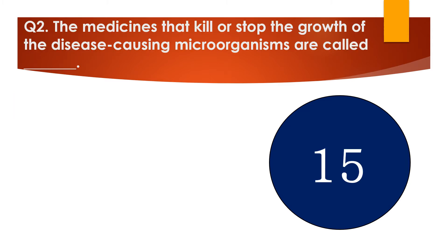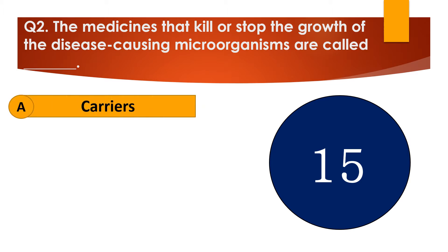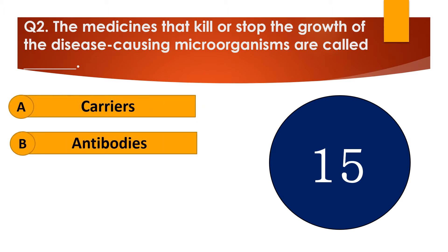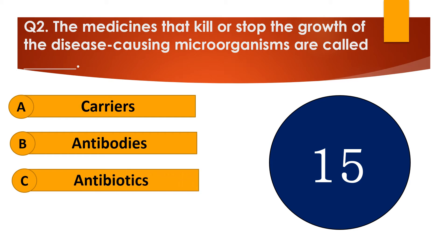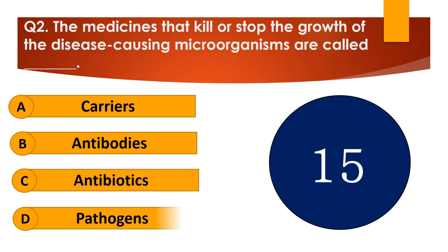Question number 2. The medicines that kill or stop the growth of disease-causing microorganisms are called dash. The options are: A. Carriers, B. Antibodies, C. Antibiotics, or D. Pathogens.